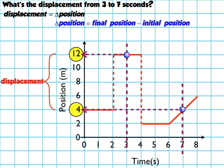So in this case, the final position is at 4 meters and the initial position is at 12 meters. So the change in position, which is the displacement, is 4 meters minus 12 meters, which is equal to negative 8 meters. So the displacement is negative 8 meters.